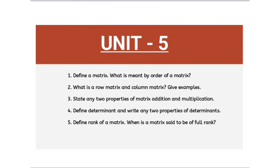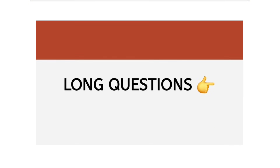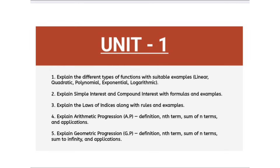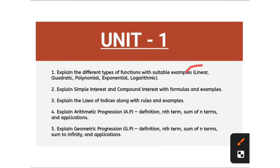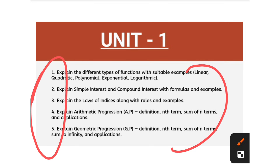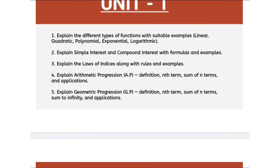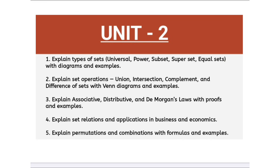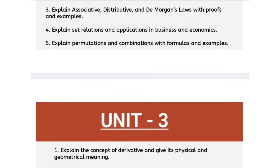Now we will discuss the long questions — theory — for Part B, and later I will discuss the problematic methods. In unit number one, I have given five questions. If you are preparing theory questions from unit number one, try to prepare these five questions. To attempt a theory question, you also need to know the structure and formulas — when you understand the problematic methods, you will automatically understand the theory as well. In unit number two, these are the five important theory questions; compulsorily one theory question we can expect from these questions only.